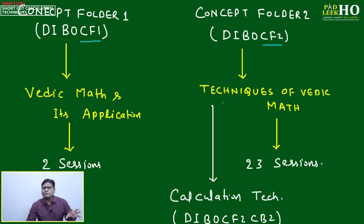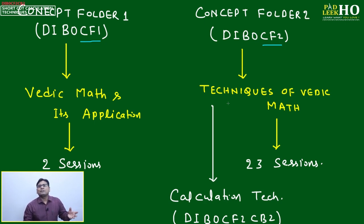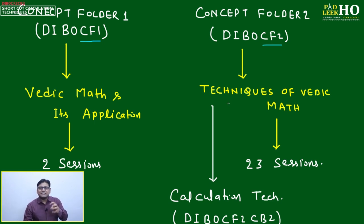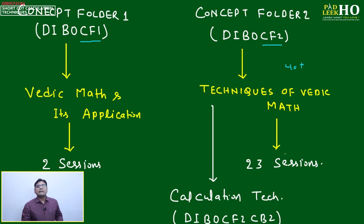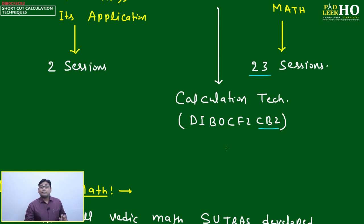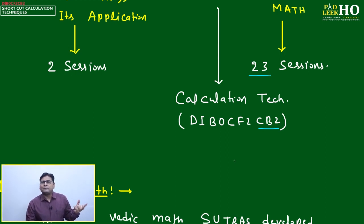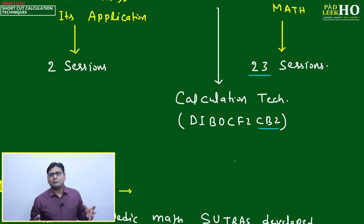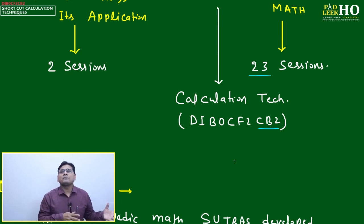For CAT preparation, I've extracted relevant techniques from those sutras — around 40-plus techniques — compiled and discussed in detail over the next 23 sessions. This is Session 2 of DIB0 CF2. In Session 1, I explored different types of mathematical operations and the order of mathematical operations — around 40 to 45 minutes covering what order to apply when you get the same or different types of operations.